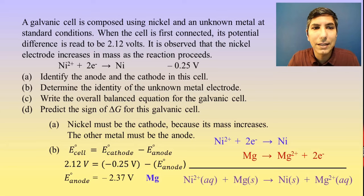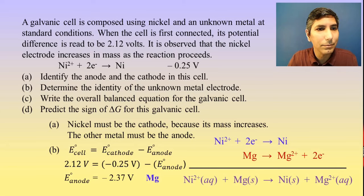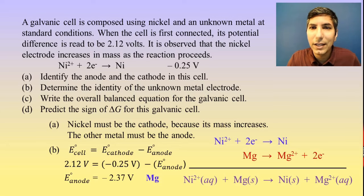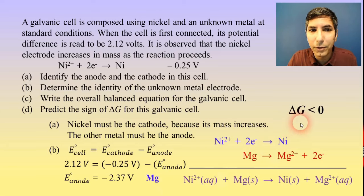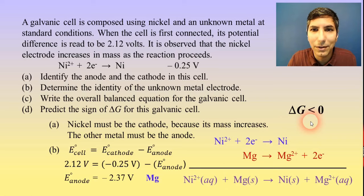For part D, predict the sign of delta G for this galvanic cell. This is a galvanic cell — it's always going to be thermodynamically favored. All galvanic cells are thermodynamically favored, so delta G has to be a negative value — it's less than zero.